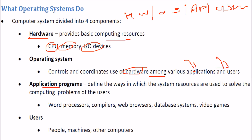Application programs are general-purpose programs used in daily life, such as word processors, compilers, web browsers like Chrome and Safari, database management systems like Oracle and SQL Server, and video games. Then of course there are users — without users, there is no use for any computer or operating system.